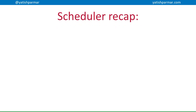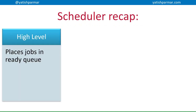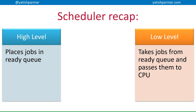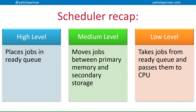There are three types of scheduler. The high-level scheduler takes jobs that are ready to run and puts them in the ready queue. The low-level short scheduler takes the job out of the ready queue and passes it to the CPU for execution. Then there's the medium-level scheduler, which sits in the middle and moves jobs between primary memory and secondary storage. The high-level scheduler only puts jobs into the ready queue if the data and peripherals are available, and the medium-level scheduler takes the job's data out of secondary storage from the spool queue and moves it into main memory ready for the CPU.